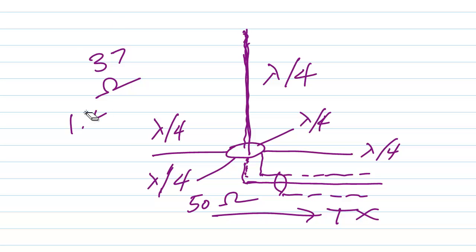not 1 to 4, 1.4 to 1, or possibly 1.5 to 1, under ideal circumstances, not 1 to 1. Now to get a 1 to 1 standing wave ratio, you can bend these radials down.